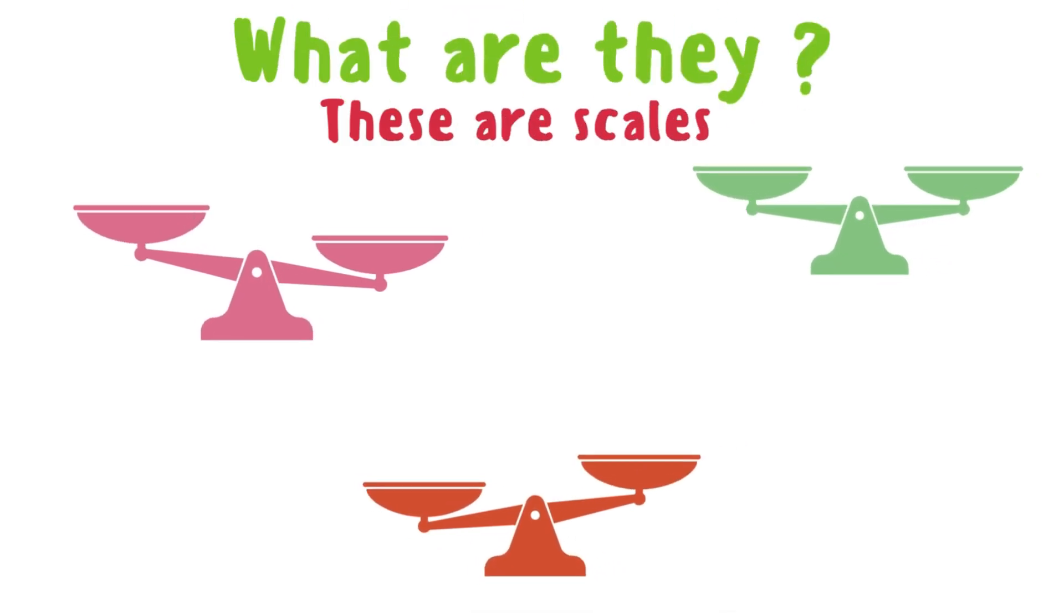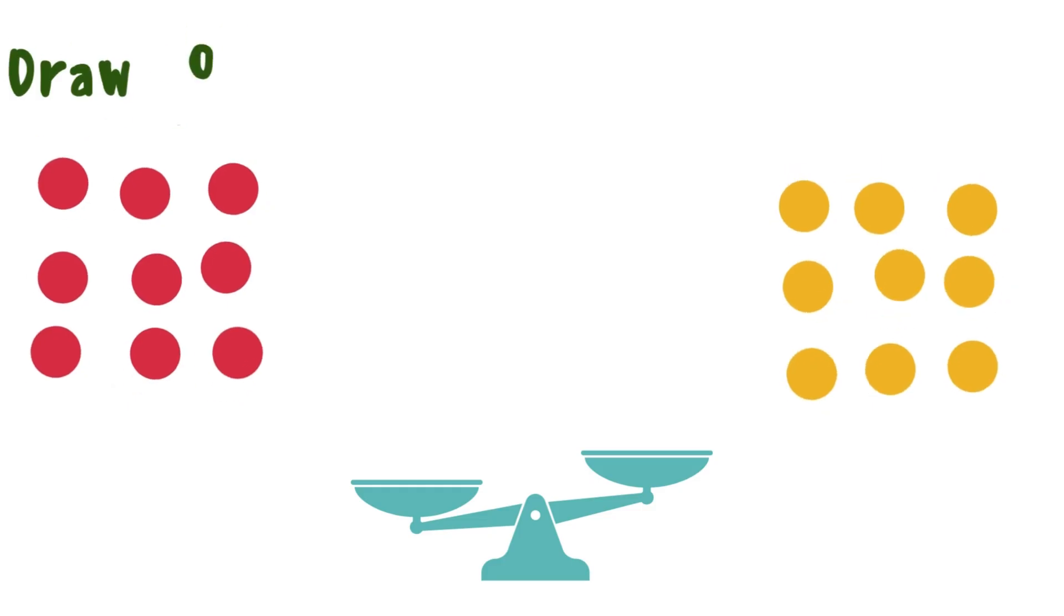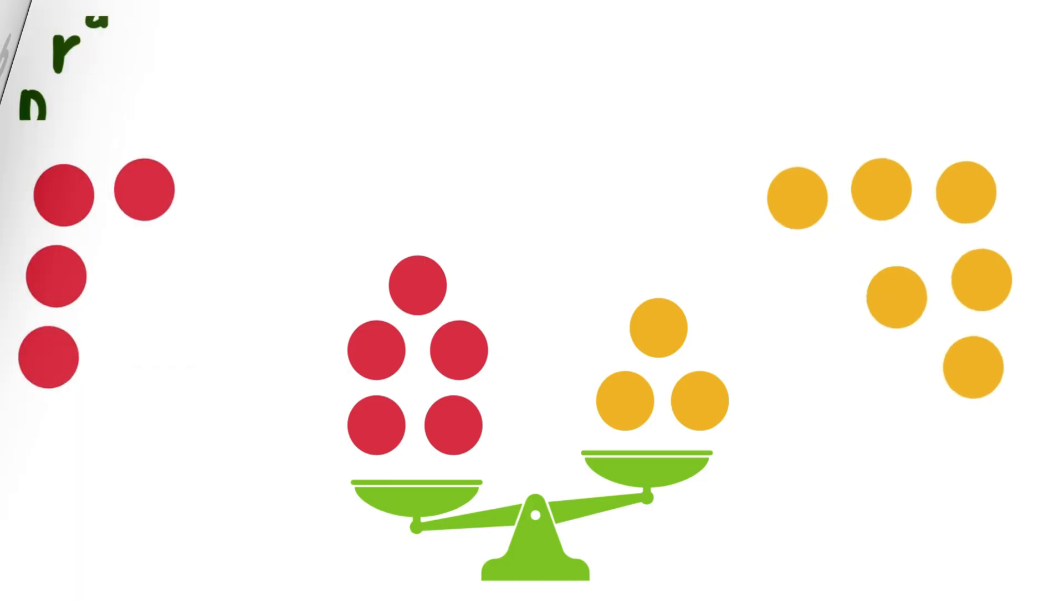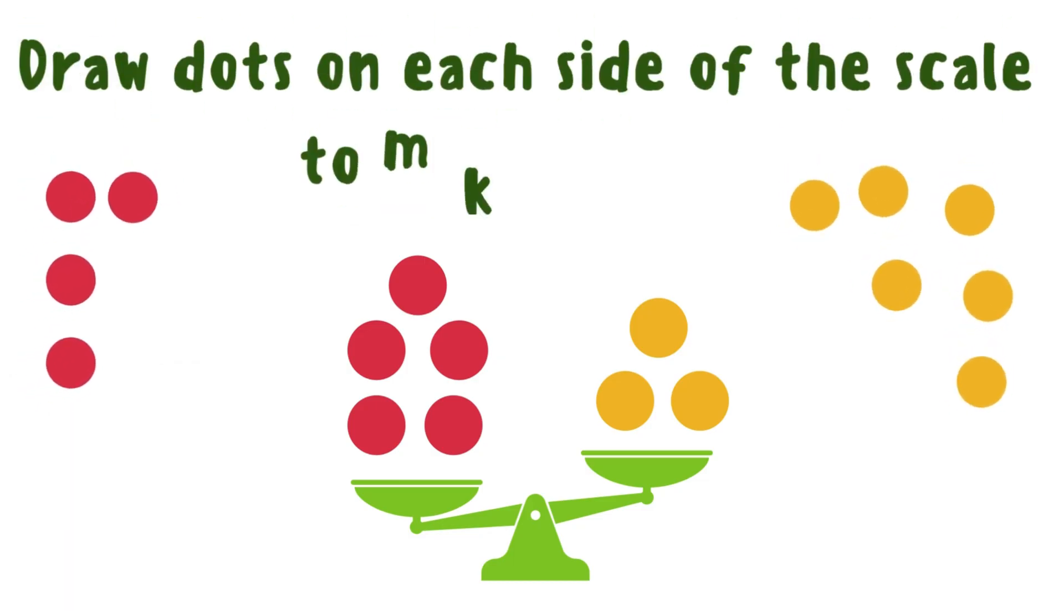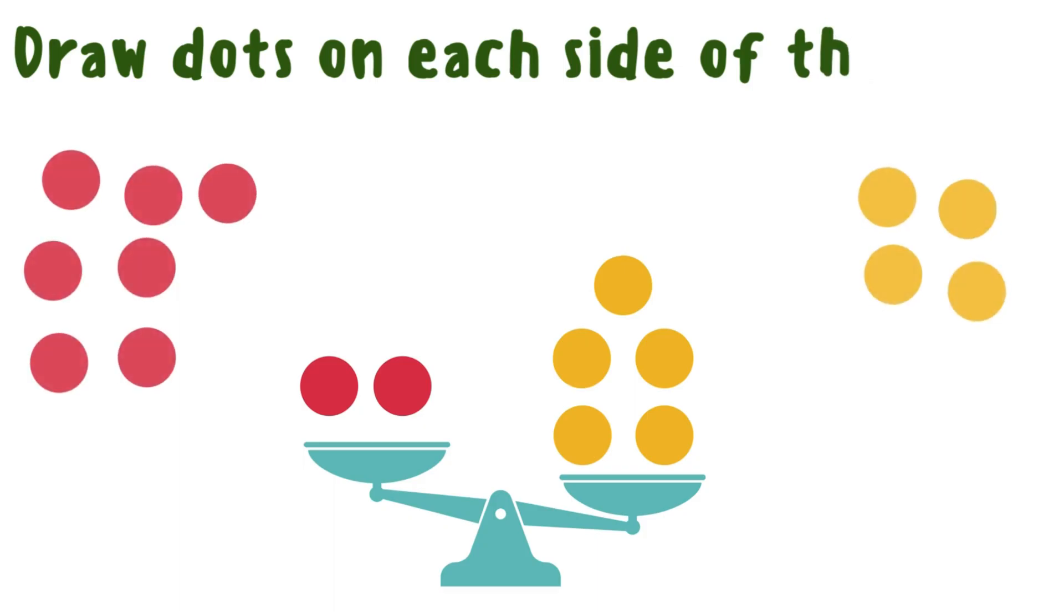What are they? These are scales. Draw dots on each side of the scale to make it true. The red side heavier than the yellow side. The yellow side heavier than the red side.